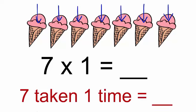Can you identify the number of rows in this picture? There is one row. Now count the number of ice creams in this picture.